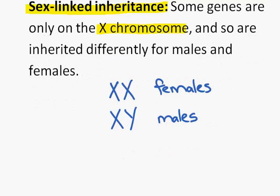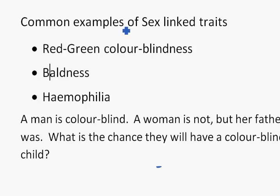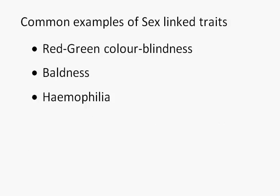Common examples of sex-linked traits are red-green colorblindness, baldness, and hemophilia. Hemophilia is a disease where your blood does not clot, so when you start bleeding you continue bleeding.